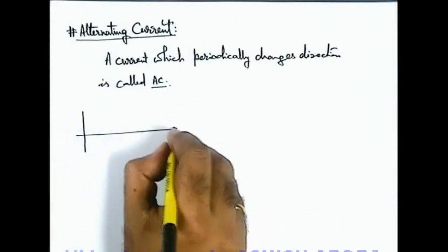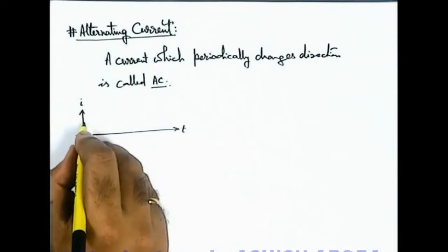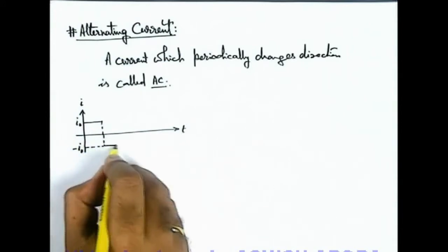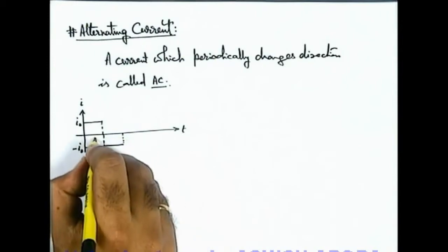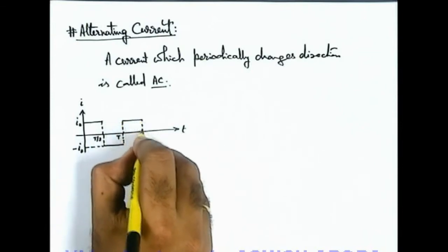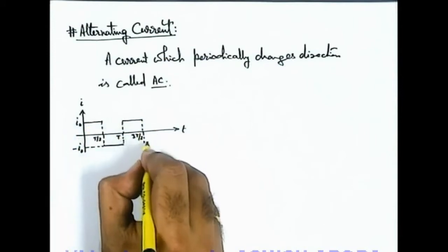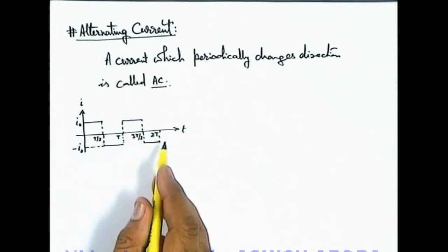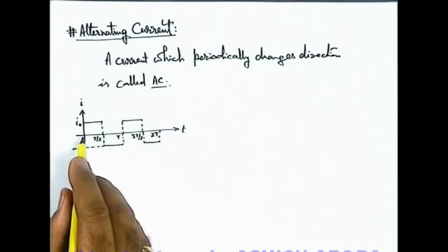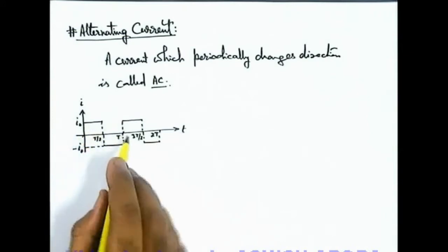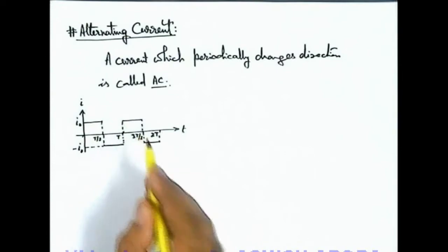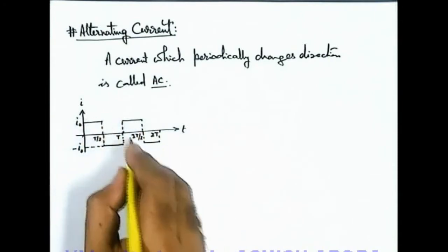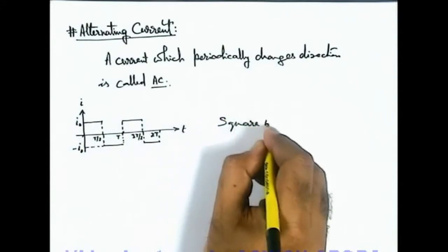A simple time function of current: say a current flows at a constant value I₀ up to a time t/2, then it reverses to a value minus I₀ and carries over for the same time t/2. Then again for t/2 up to 3t/2 it is constant at I₀, and then constant at minus I₀ up to time 2t, and so on. In one cycle from 0 to t, current changes its direction. This waveform, shaped like a square or rectangle, is called square wave alternating current.